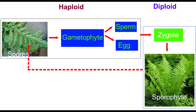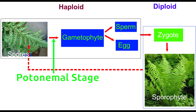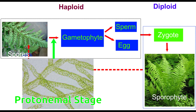Before classifying bryophytes, let's learn about the protonema stage that occurs between the formation of gametophyte and spores. In the protonema stage, a filamentous structure emerges from spores which later forms the gametophyte. These filaments are full of chlorophyll, which helps in further cell development. Not all plants go through this stage.